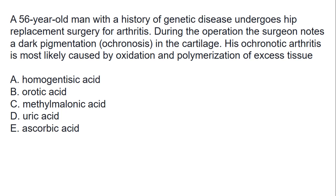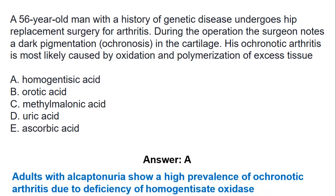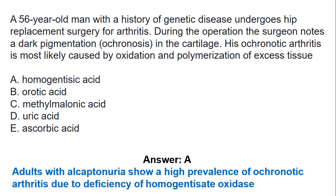A 56-year-old man with a history of genetic disease undergoes hip replacement surgery. During the operation, the surgeon notes dark pigmentation or ochronosis in the cartilage. His ochronotic arthritis is most likely caused by oxidation and polymerization of excess tissue metabolites. The best answer is A, which is homogentisic acid. Adults with alkaptonuria show a high prevalence of ochronotic arthritis due to deficiency of homogentisate oxidase.